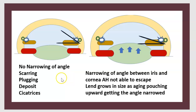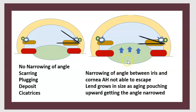To remember: non-angular closure occurs by scarring, plugging, or deposit. Narrowing of the angle occurs with aging, as the lens grows and pushes upward, causing progressive angle narrowing.